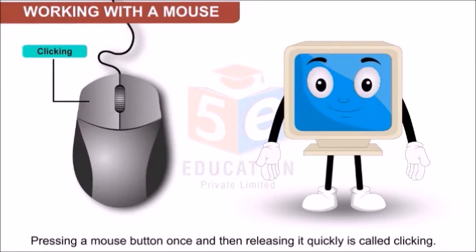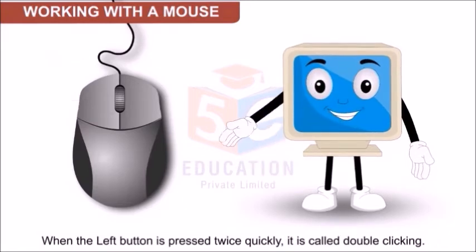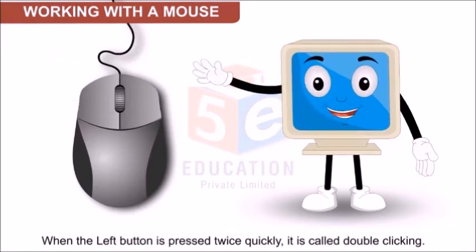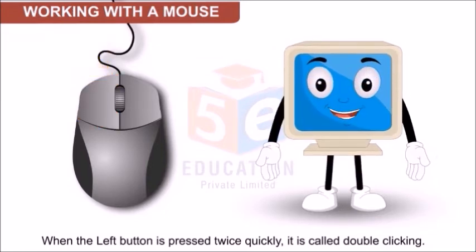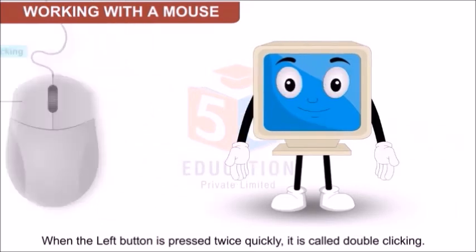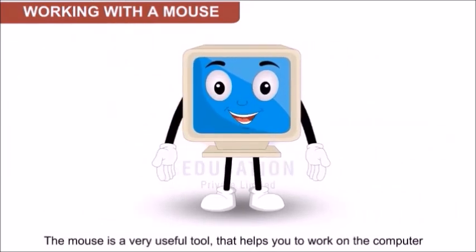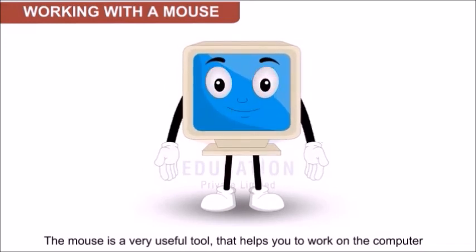When the left mouse button is pressed once, it is called a single click. When the left mouse button is pressed twice, it is called a double click. So students, now you understand — the mouse is a very useful tool that helps you to work on the computer.